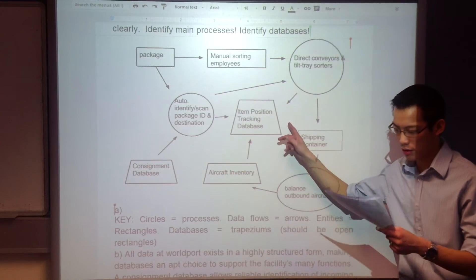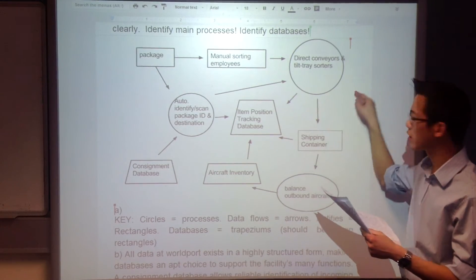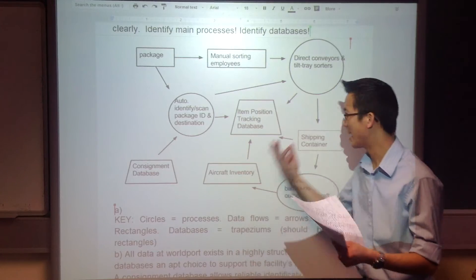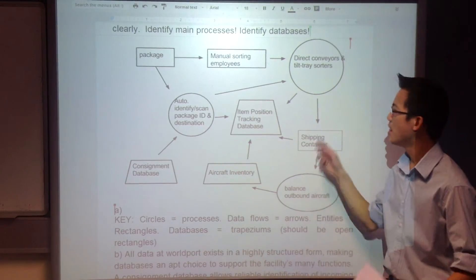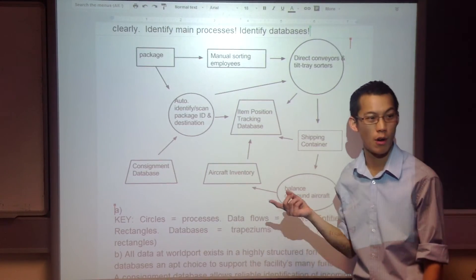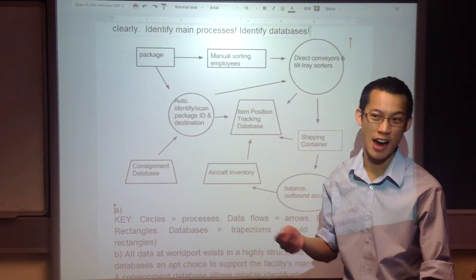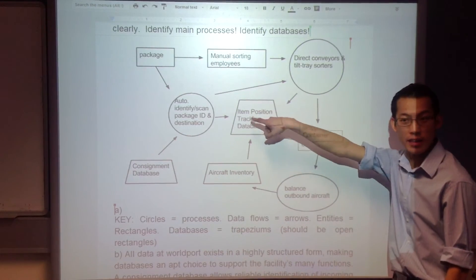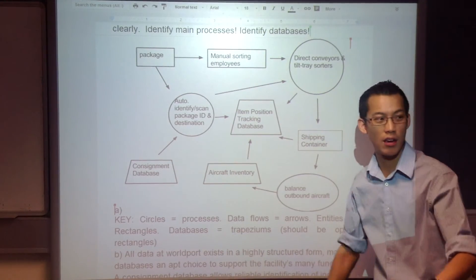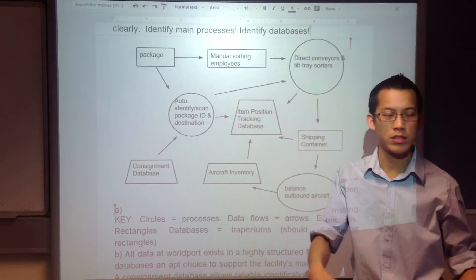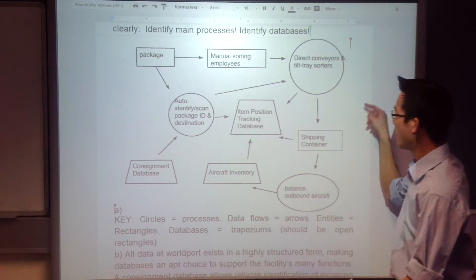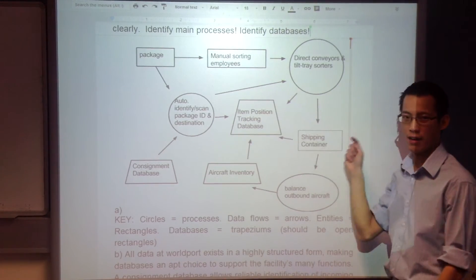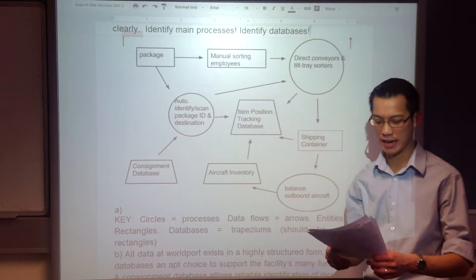You could have also included the customer. If you've ever ordered something online and had it sent to you, you can check where it's up to — oh, it's here, or it's there, what's the progress. So the customer, as an optional entity, is getting data in and out of the item position tracking database.